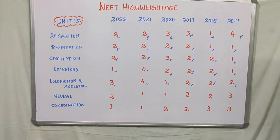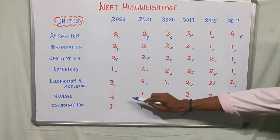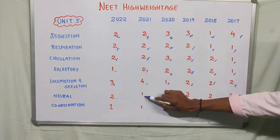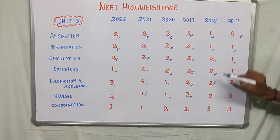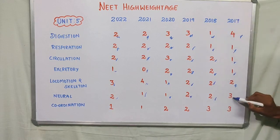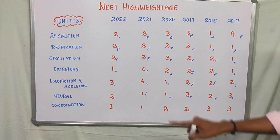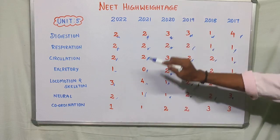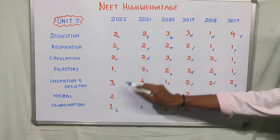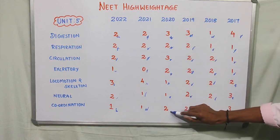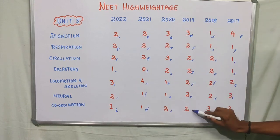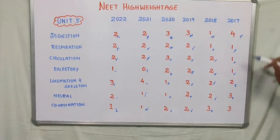Neural Coordination: 2022 had 2 questions, 2021 had 1 question, 2022 had 1 question, 2019 had 2 questions, 2017 had 3 questions. Chemical Coordination: 2022 had 1 question, 2021 had 1 question, 2020 had 2 questions, 2019 had 2 questions, 2018 had 3 questions.